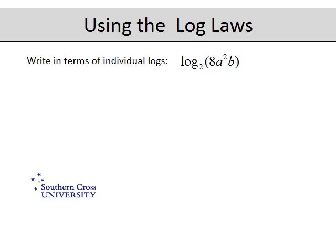And then this last question is a little bit trickier. It says we've basically got to unpack it and write it as individual logs. So you can see that this is a product here, we've got 8 times a squared times b. So we can use that product rule in reverse to take it back to individual terms.